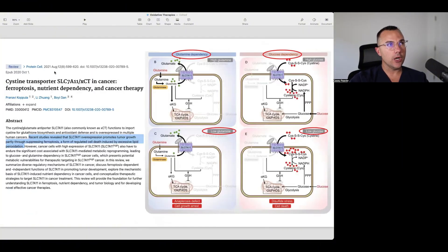This paper was published in August 2021, called Cysteine Transporter SLC-7A11, aka XCT, in Cancer, Ferroptosis, Nutrient Dependency, and Cancer Therapy. It says recent studies have revealed that SLC-7A11 overexpression promotes tumor growth partly through suppressing ferroptosis, a form of regulated cell death induced by excessive lipid peroxidation. We see here that it highlights the glutamine dependency and glucose dependency. When you put cancer cells in a low glutamine environment, that leads to growth arrest. When you put these cells in a low glucose environment, that also leads to cell death and growth arrest through a different mechanism through disulfide stress.